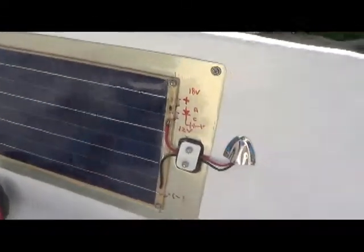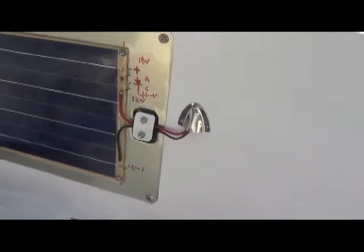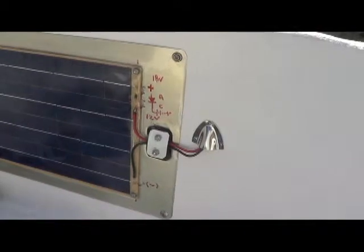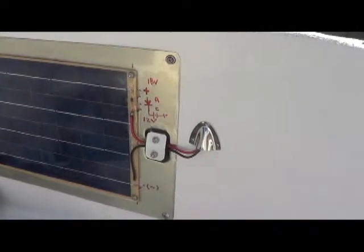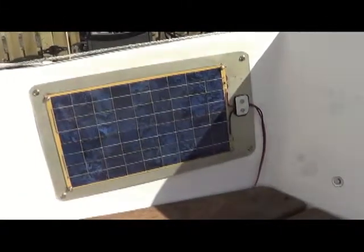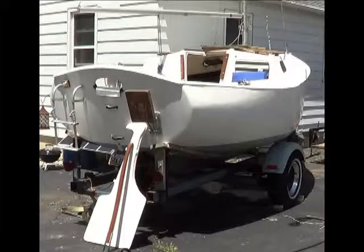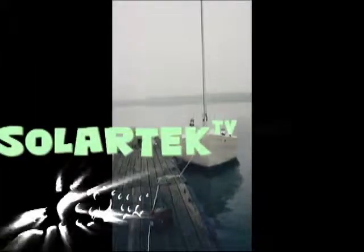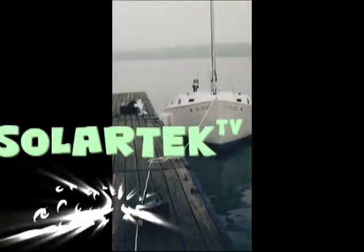Be sure to watch our next video as we snake solar panel wiring behind bulkheads and underneath decking with hookup to the main battery systems in our v-berth on board Water Dance, the 17-foot all solar-powered sailboat.